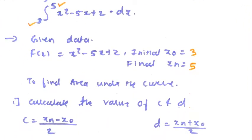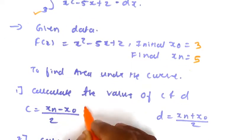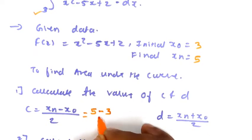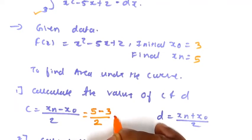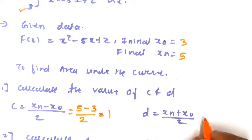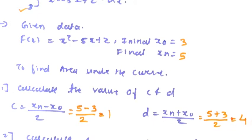To find the area under the curve, the first step is to find the value of c and d. The formula for c is (xn minus x0) divided by 2, which is (5 minus 3) divided by 2, equal to 1. Similarly, d = (xn plus x0) divided by 2 = (5 plus 3) divided by 2, equal to 4. So c = 1 and d = 4.